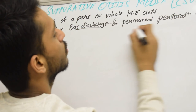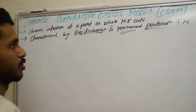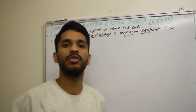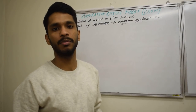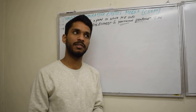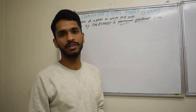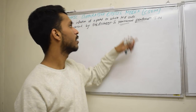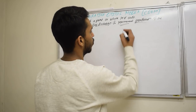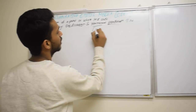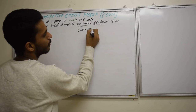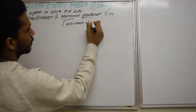What is permanent perforation? Usually, perforation of the tympanic membrane heals within 6 to 12 weeks. But if it exceeds 12 weeks, we call it a permanent perforation. So permanent perforation means a perforation lasting more than or equal to 12 weeks.